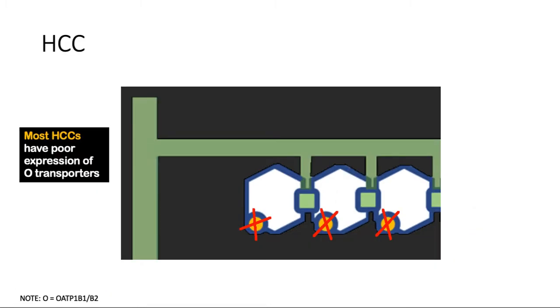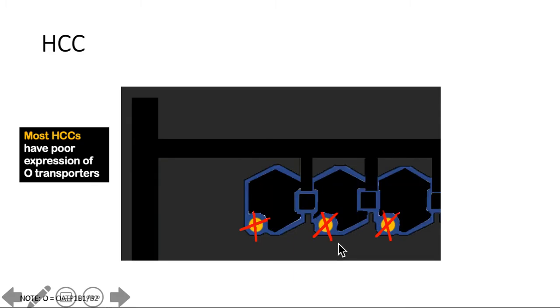What happens in HCC? In most HCCs, the tumor does not have this O-transporter. Can you guess what will happen during the hepatobiliary phase? Will it be hyper or hypo-intense? If you guess that it will likely be hypo-intense in this phase, you're correct. Because of the absence of this transporter, the contrast won't be able to enter the hepatocyte and hence into the biliary tree.